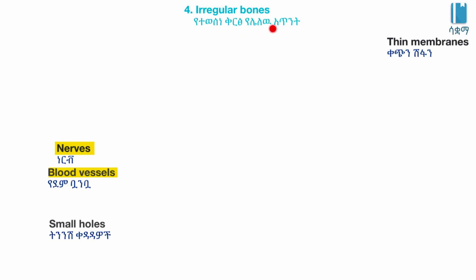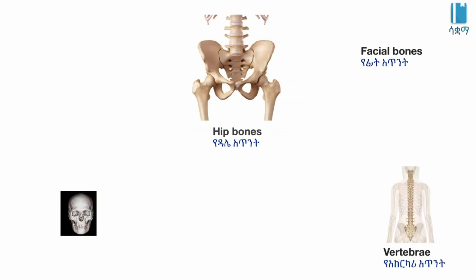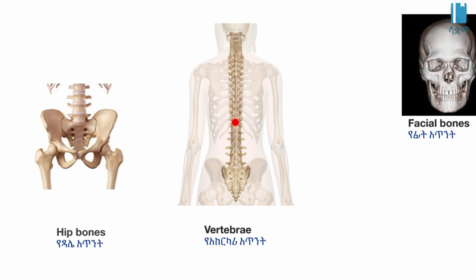Irregular bones are typically thin membranous bones. They have nerves and blood vessels, and often have small holes. Examples include the hip bones, facial bones, and vertebrae.